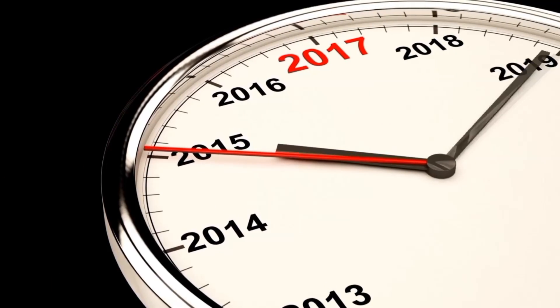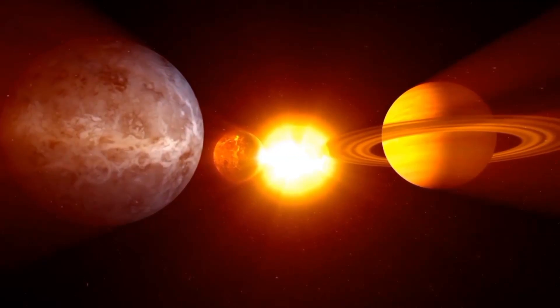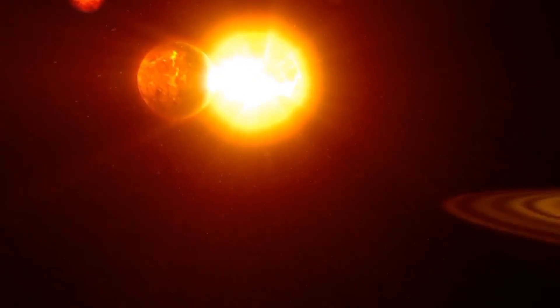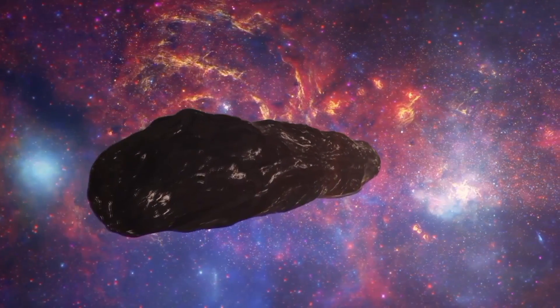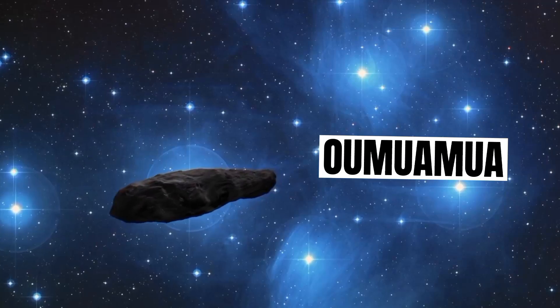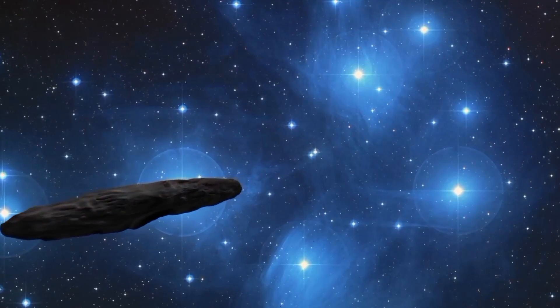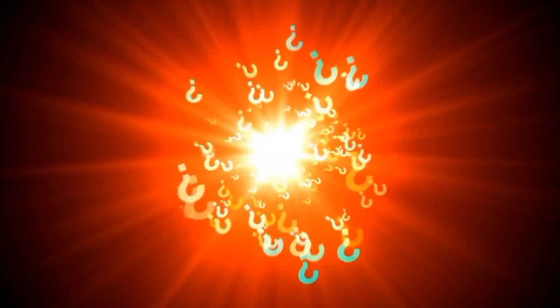In 2017, NASA discovered the first interstellar traveler from another star system. This visitor was a half-mile-long interstellar object given the name Oumuamua, which comes from the Hawaiian word for messenger. The comet piqued the world's curiosity and raised several intriguing questions.